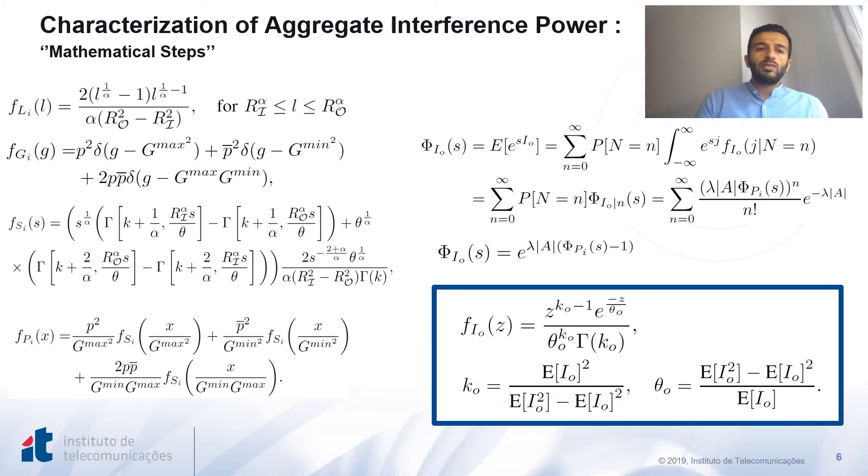Based on the derived moment generating function, the high-order moments are easily computed, and moment matching approach were used to approximate the aggregate interference power to a gamma approximation with the PDF given by F of I_0 with shape and scale parameters k and theta respectively.